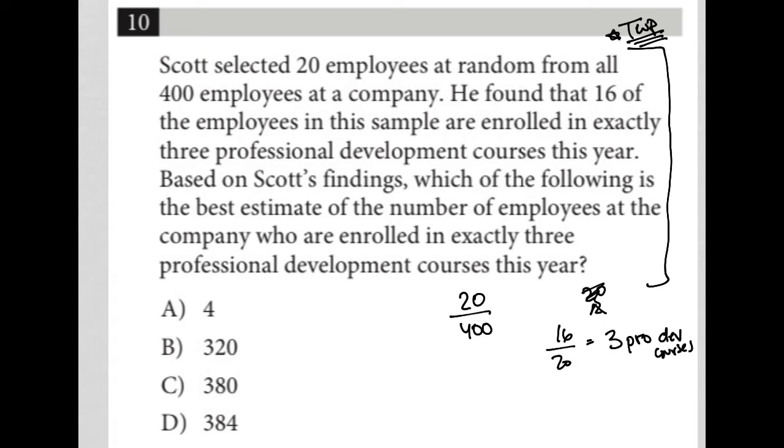So basically this fraction, not so important right now. This one, much more important. How do I know that? Well, because this fraction is all about just choosing 20 people out of 400 at random. This is the fraction that has to do with the actual three courses being taken.